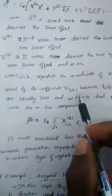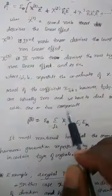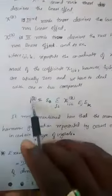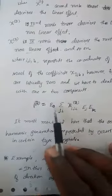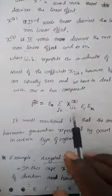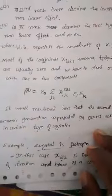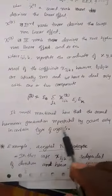Here i, j, k represent the coordinates x, y, z. Most of the coefficients χᵢⱼₖ are zero, so we only need to deal with one or two components. That is why the polarization vector is written as P² = ε₀ Σᵢⱼₖ χᵢⱼₖ² Eⱼ Eₖ. It should be mentioned here that second harmonic generation occurs only in certain types of crystals.